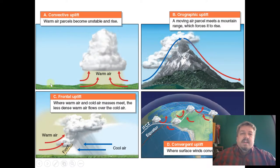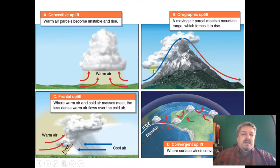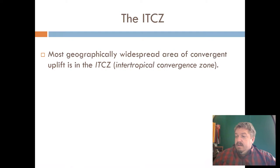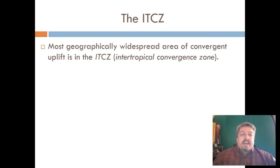Let's look at this. Convective uplift — we see this in the summer all the time. It's a warm, sunny day, the sun beats down, it warms the air over the ground, the warm air rises, and as it rises it becomes unstable — we see thunderstorms. Orographic uplift — air is lifted by mountains, causing expansion and then contraction. In frontal uplift, you have a mass of cold air combined with a mass of warm air, and the warm air rides on top of it. And then the last one is the ITCZ — convergent uplift — which happens around the equator and is the largest area of uplift in the world.